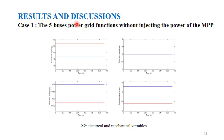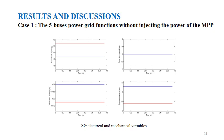The first case is when the five-bus power grid functions without injecting power from the micropower plants. The figure shows the variation of electrical and mechanical quantities — internal angle, speed, voltage, and power — of both synchronous generators. The north generator is shown by blue curves and the south by red curves. All electrical and mechanical quantities are constant with time, as there is no integration of micropower plants and no modification of the power network.